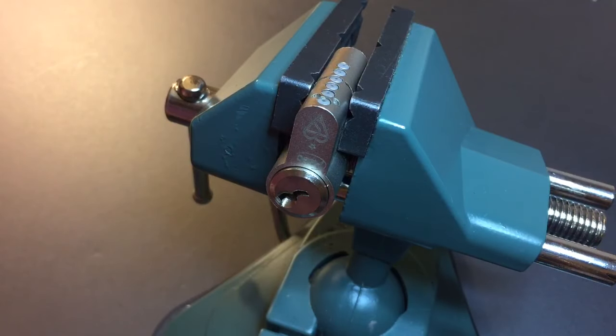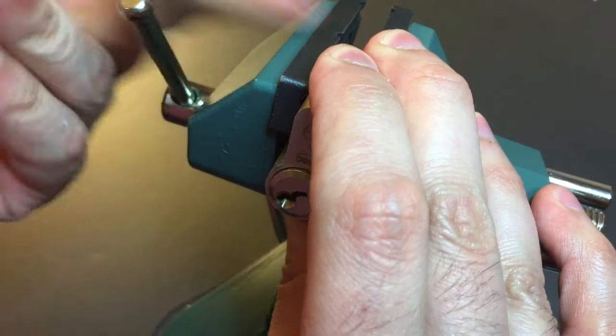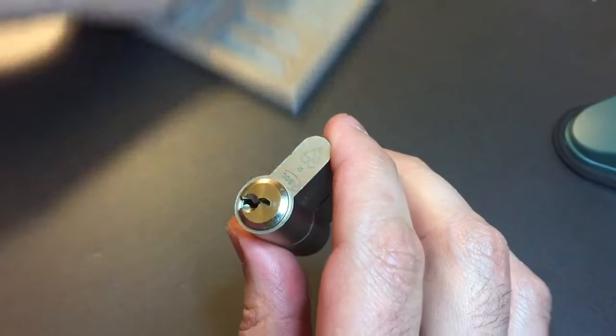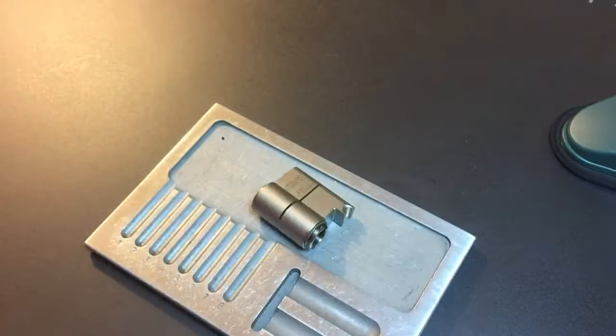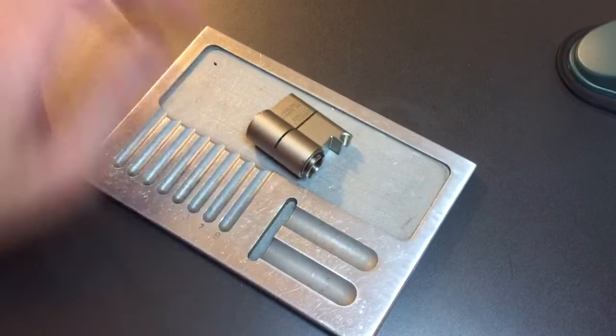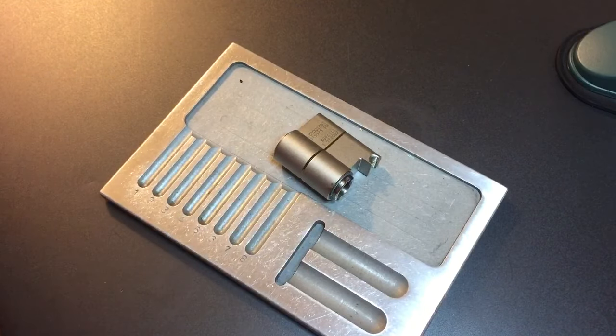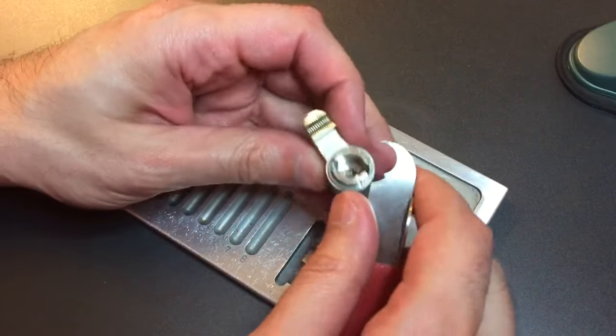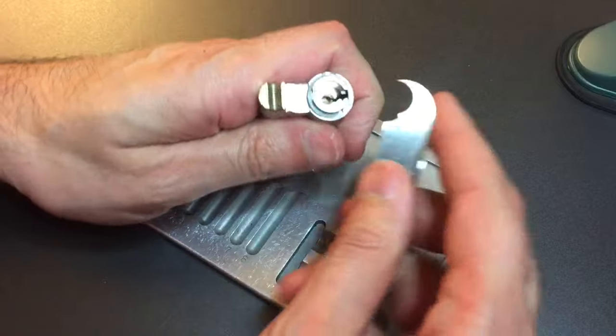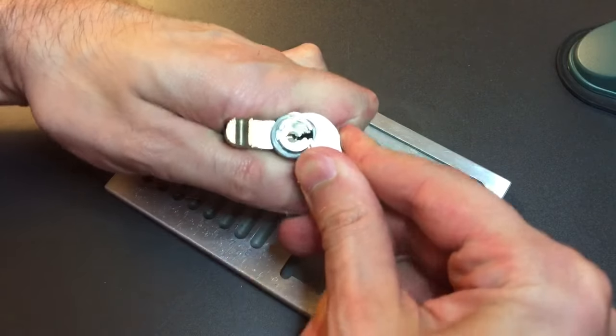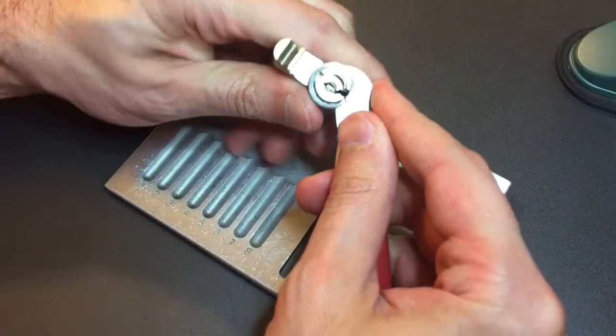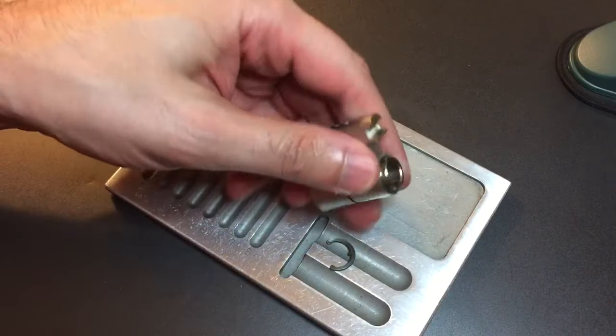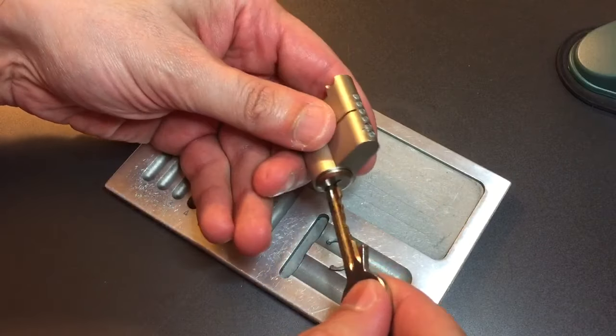Okay let's take this lock apart and see what's inside. Okay first thing we need to do is remove the clip from the back of this lock and there we go. Now a key and a follower should get this apart.